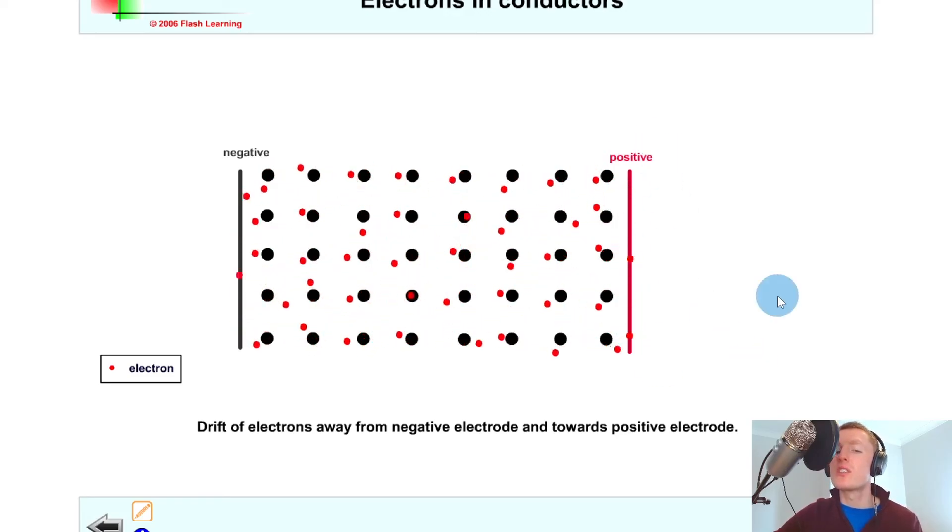So this is what conduction looks like in a material. It's the net movement or overall movement of electrons through the material.